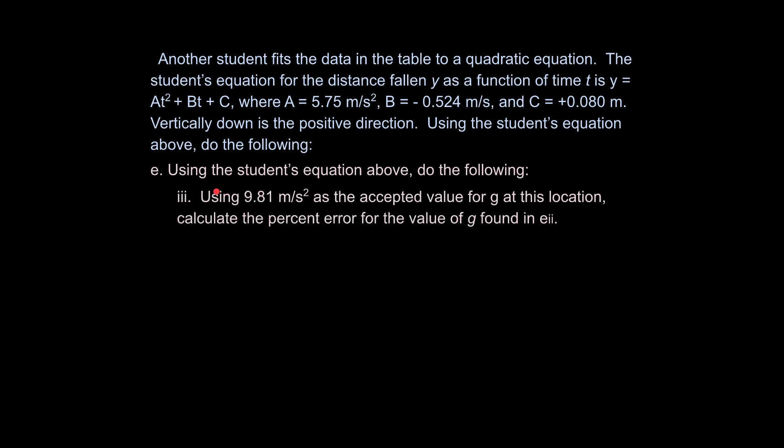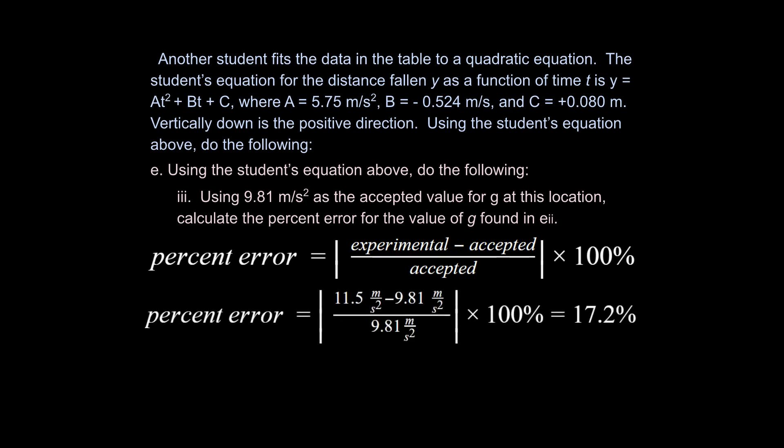And it says using the student's equation above do the following. Using 9.81 as the accepted value for g at this location, calculate the percent error for the value of g found in E2. So it turns out this equation is not in your equation sheet. But hopefully over the course of doing enough physics and other science courses you've done percent error often enough that you basically understand what this is going to be. If you don't have this memorized, you should memorize this equation. So it's going to be percent error is your experimental minus your accepted divided by your accepted. You're going to take the absolute value of that and multiply it by 100%. If you do that here, it turns out that you end up with 17.2% error.